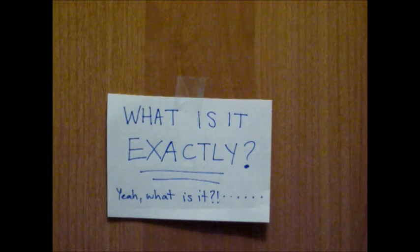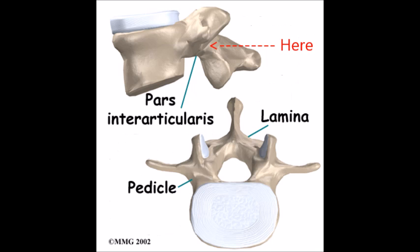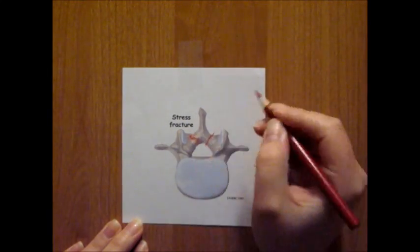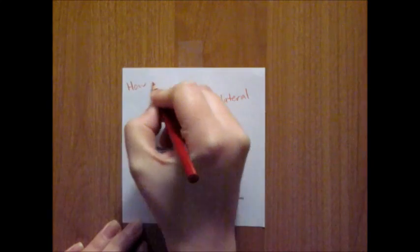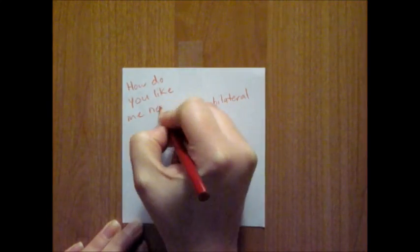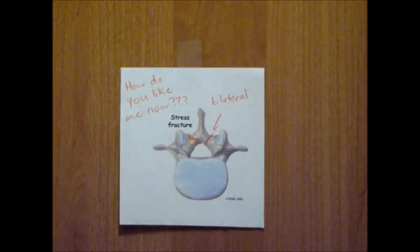So what is it exactly? Spondylolysis is a condition which affects the lumbar spine. It is defined as a defect or stress fracture in the pars interarticularis of a lumbar vertebra, and can occur unilaterally, meaning on one side, as seen in 25-50% of cases, or bilaterally, meaning on both sides. The majority of cases occur at the 5th lumbar vertebra, or L5, with much of the remainder occurring at L4.